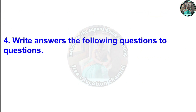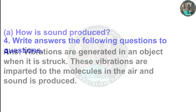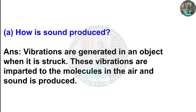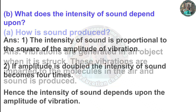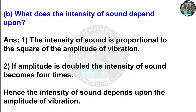Question 4: Write answers. (a) How is sound produced? Answer: Vibrations are generated in an object when it is struck. These vibrations are imparted to the molecules in the air and sound is produced.